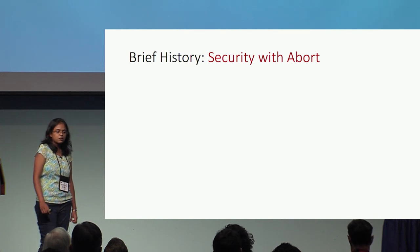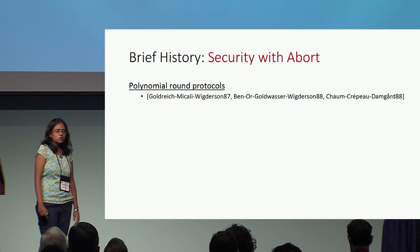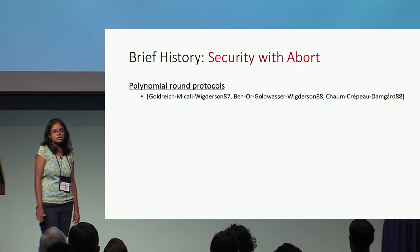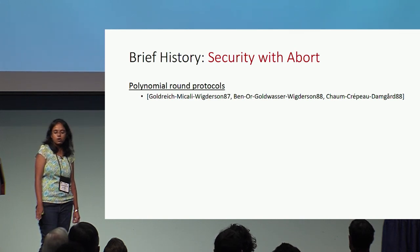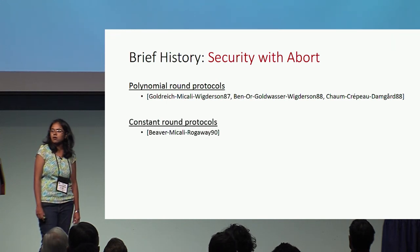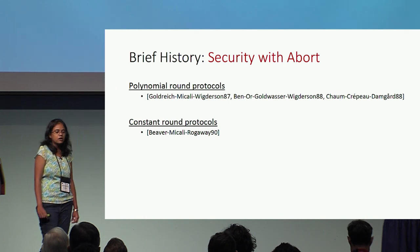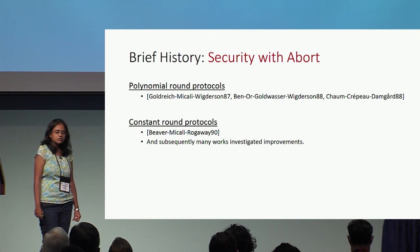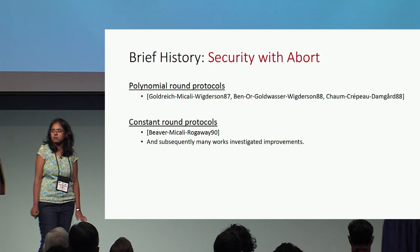Let me give an overview of what is already known in this area. Feasibility results for security with abort were already established in the 80s, giving polynomial round protocols. Then in 1990, Beaver, Micali, and Rogoway initiated the study of constant round protocols. Since then, there have been several works improving these results, but due to lack of time I'll skip over to just two-round protocols.